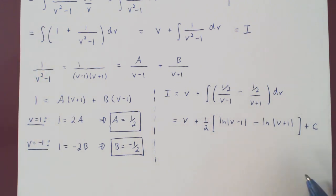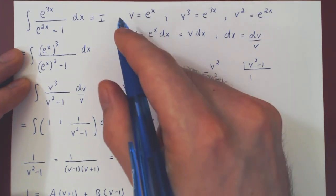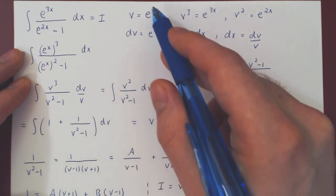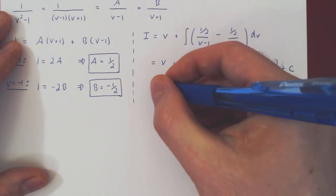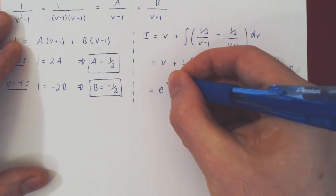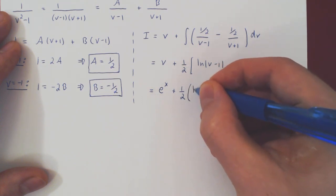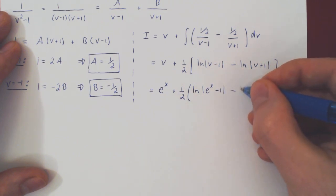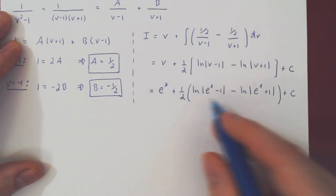So all we must do now is return to a function of x. Well, if you go back, v was already a function of x. v is e to the x. So now we just replace v in our expression by e to the x. So what do we have? We have e to the x plus a half of the ln of e to the x minus 1, minus the ln of e to the x plus 1, plus of course c. And this is our final answer.